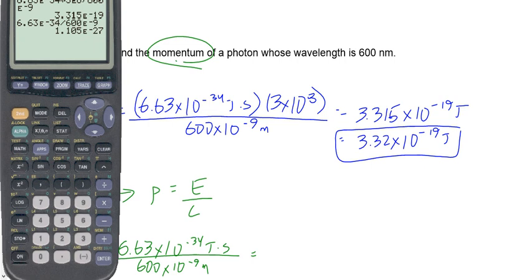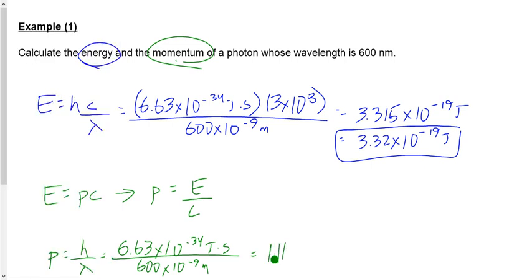Now we want to find the momentum of that photon. We have two options: rearrange E equals pc to get p equals E over c now that we have E, or use p equals h over lambda directly: 6.63 times 10 to the minus 34 divided by 600 times 10 to the minus 9 meters, which gives us 1.11 times 10 to the minus 27 kilograms meters per second. The units are a little weird — talking about the momentum of a massless photon with units of kilograms meters per second — but that's what it is.